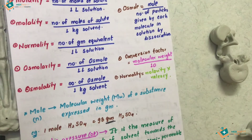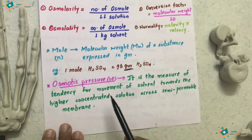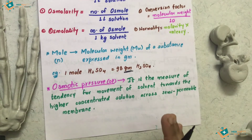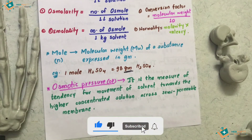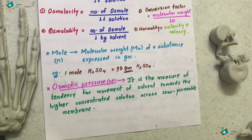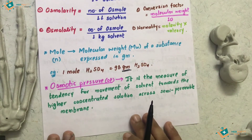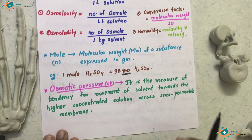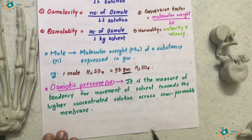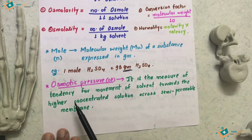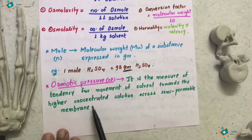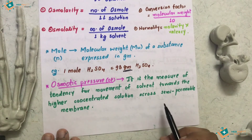Osmotic pressure is the last concept. Osmotic pressure occurs when osmotic active particles cross the semipermeable membrane and a pressure builds up against that movement. The accurate definition: osmotic pressure is the measure of the tendency for movement of solvent towards a higher concentrated solution across a semipermeable membrane.